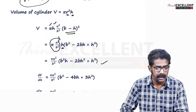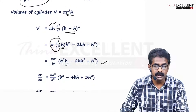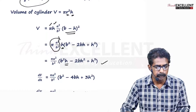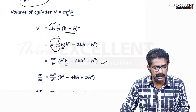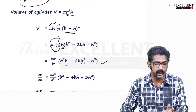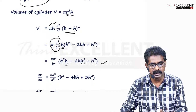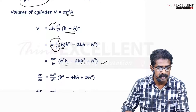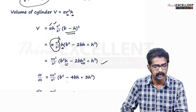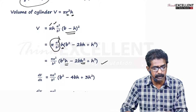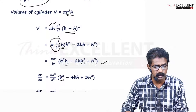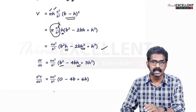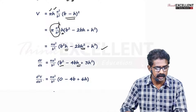Differentiate once to get dV/dH = (π A²/B²)(B² minus 4BH plus 3H²). H is the only variable; A and B are constants. Differentiate again to get the second derivative: d²V/dH² = (π A²/B²)(minus 4B plus 6H).